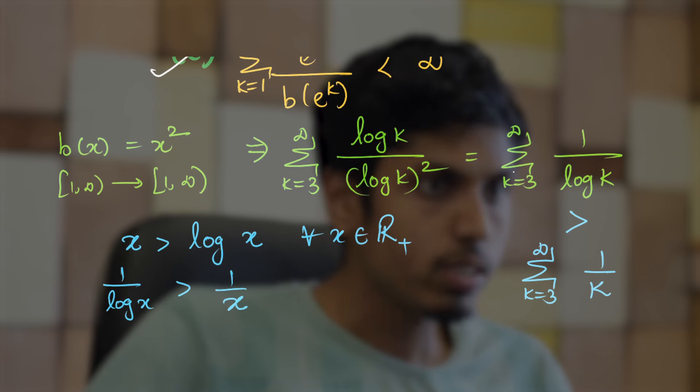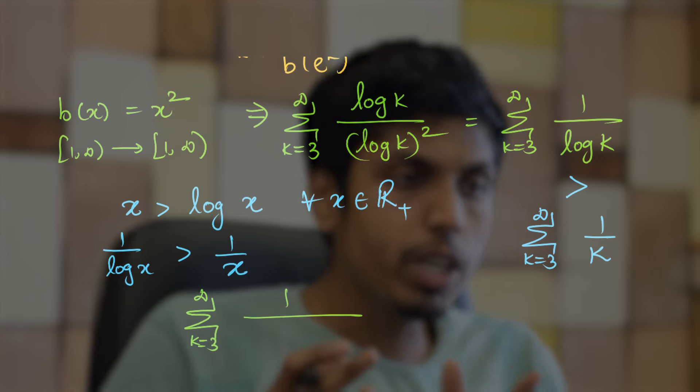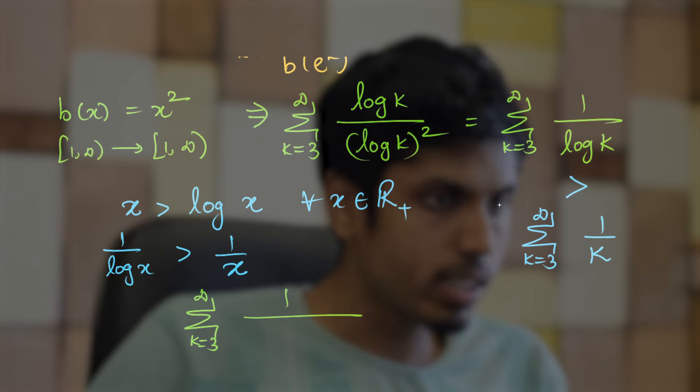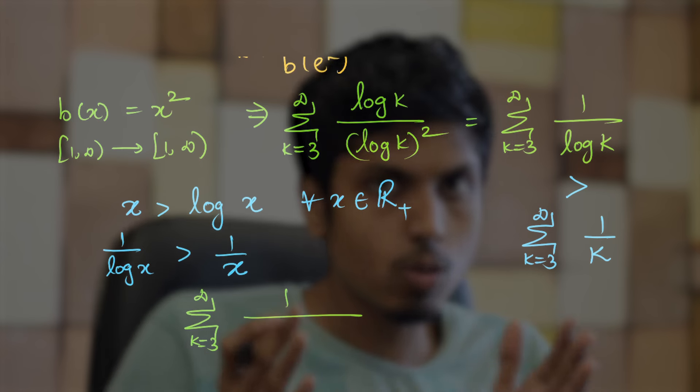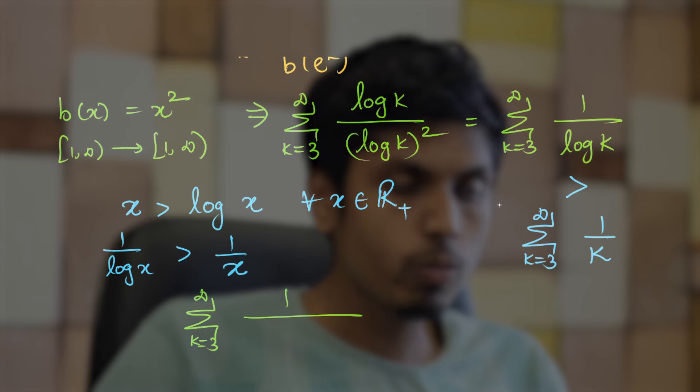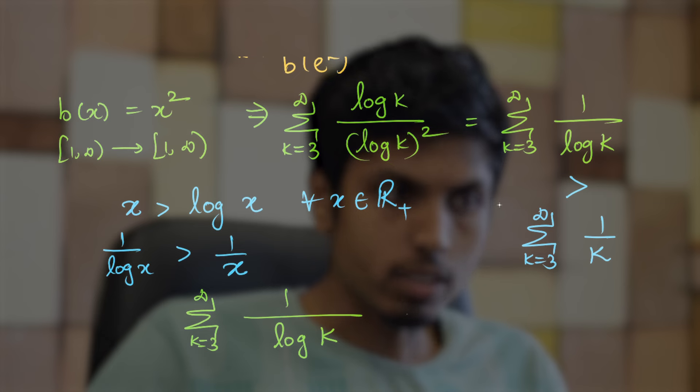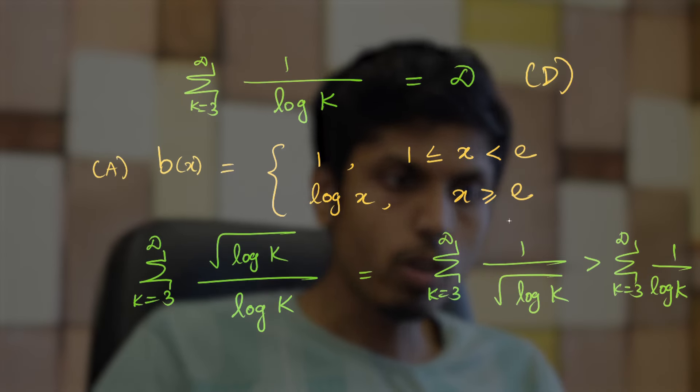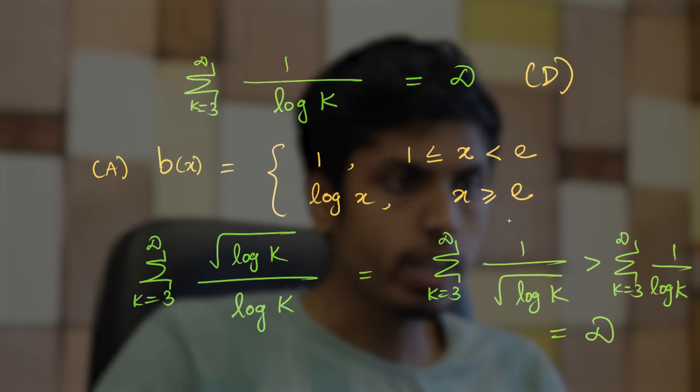Going to option D, it says k equal to 3 to infinity 1/√b(log x). Now, let's substitute b(x) as x². So, it will be (log x)². So, root of (log x)² would be just log x. So, you would get again 1/log k which diverges and hence 1/√log k diverges. So, this is a counter example for option A.